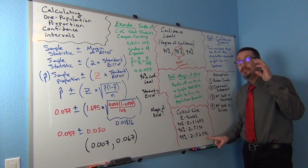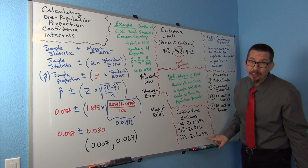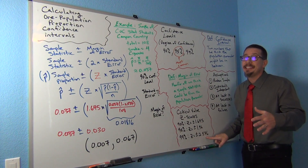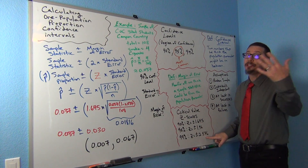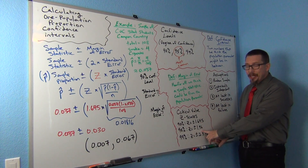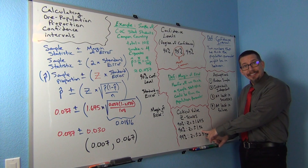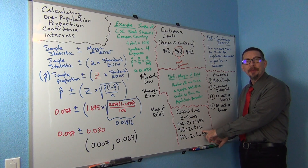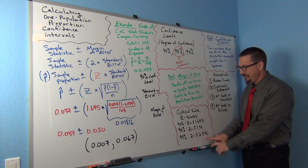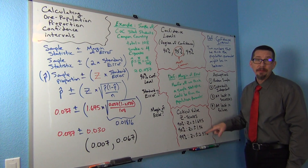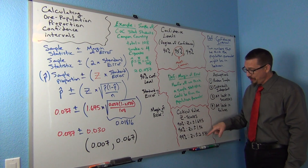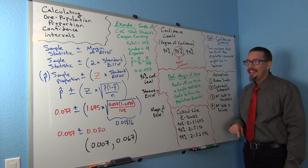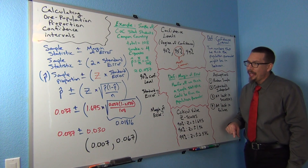Even though the empirical rule said about 2 for 95%, 1.96 is very close to 2 — it's just a bit more accurate. These are actually very famous z-scores in the statistics world; we all have these numbers memorized. So let's go back to the formula and see how we can calculate this.